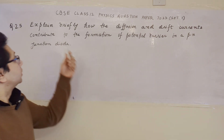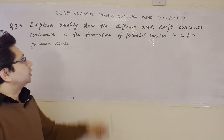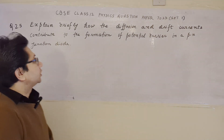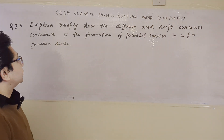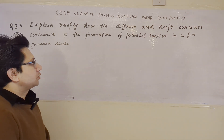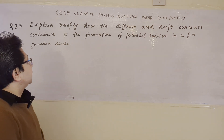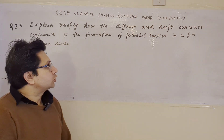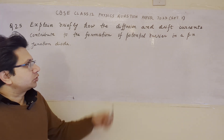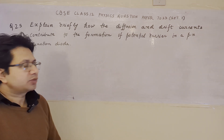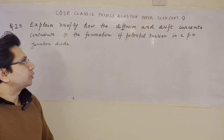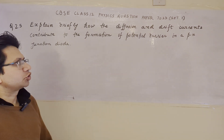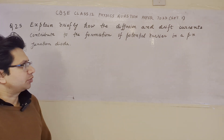The question is: explain briefly how the diffusion and drift currents contribute to the formation of the potential barrier in a P-N junction diode. So the problem is based on the topic semiconductor junction diode and in particular the formation of potential barrier.